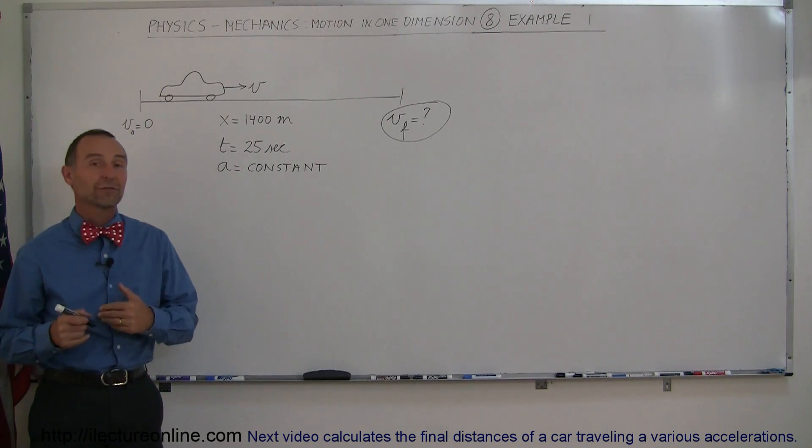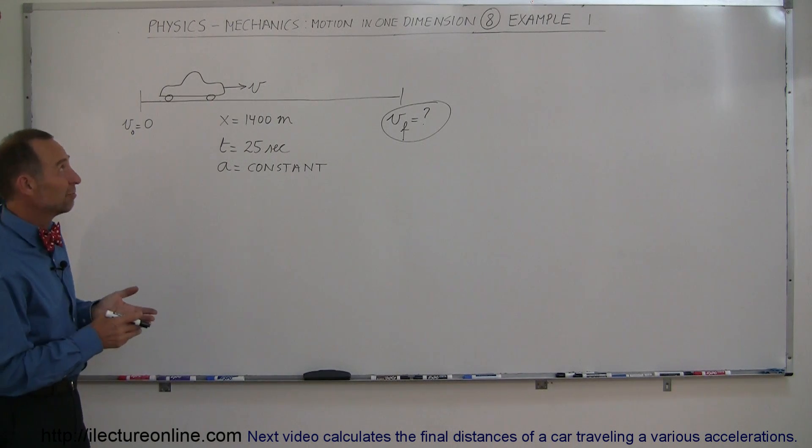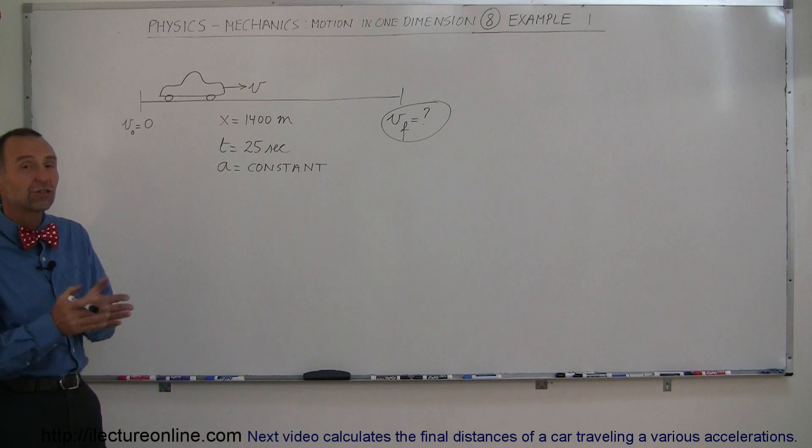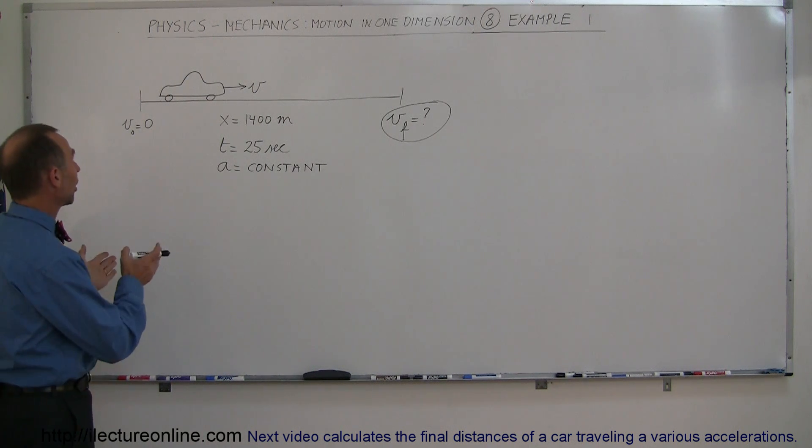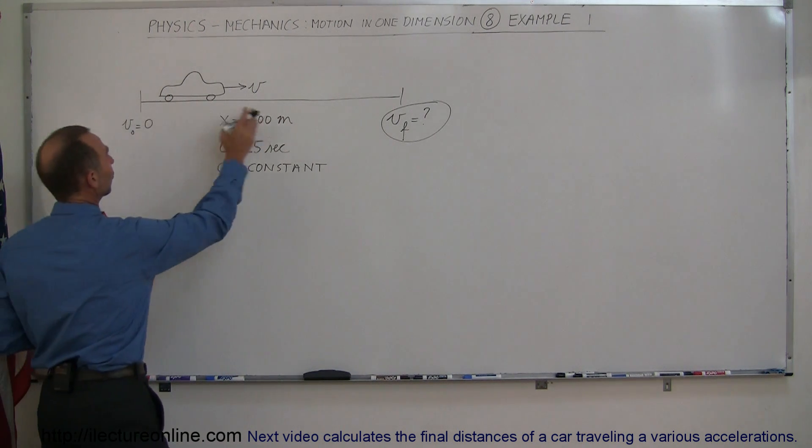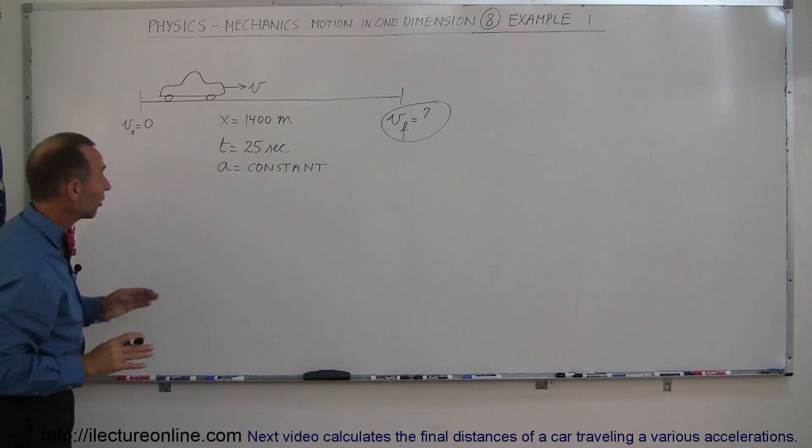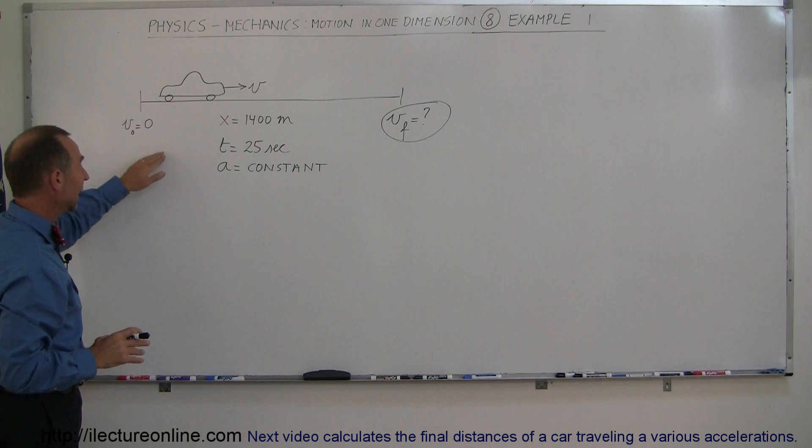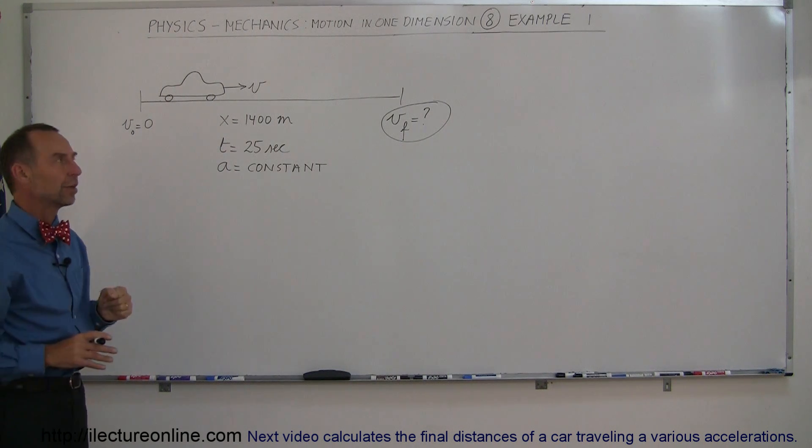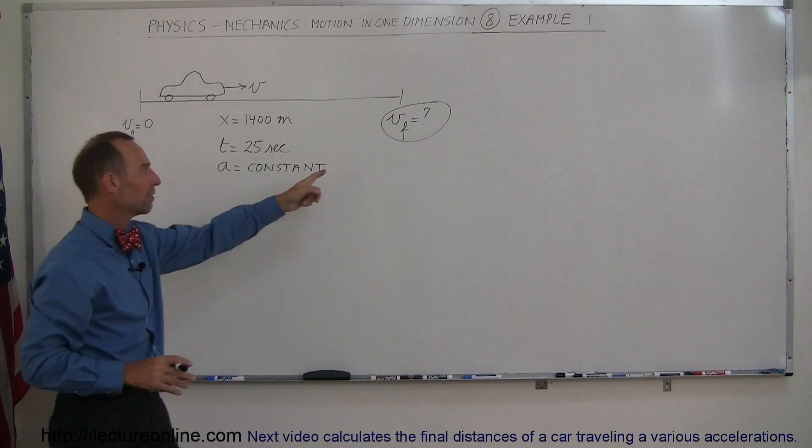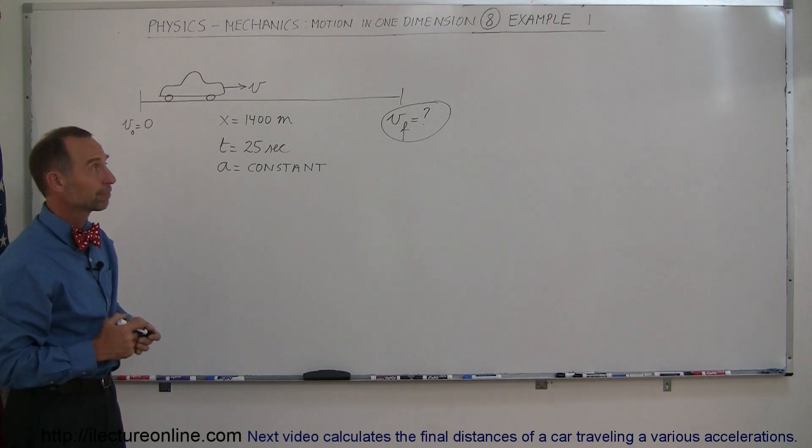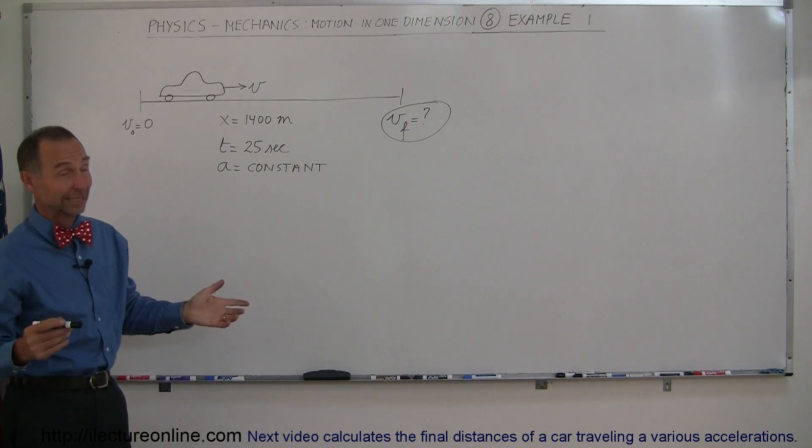Here's our first example of how to solve physics problems in one-dimensional motion. So here's a simple problem. Let's say we have a car. It's driving a distance of 1400 meters in a time of 25 seconds. It starts out at zero velocity and it has a constant acceleration. How fast will it be traveling when it gets at the end of those 1400 meters?